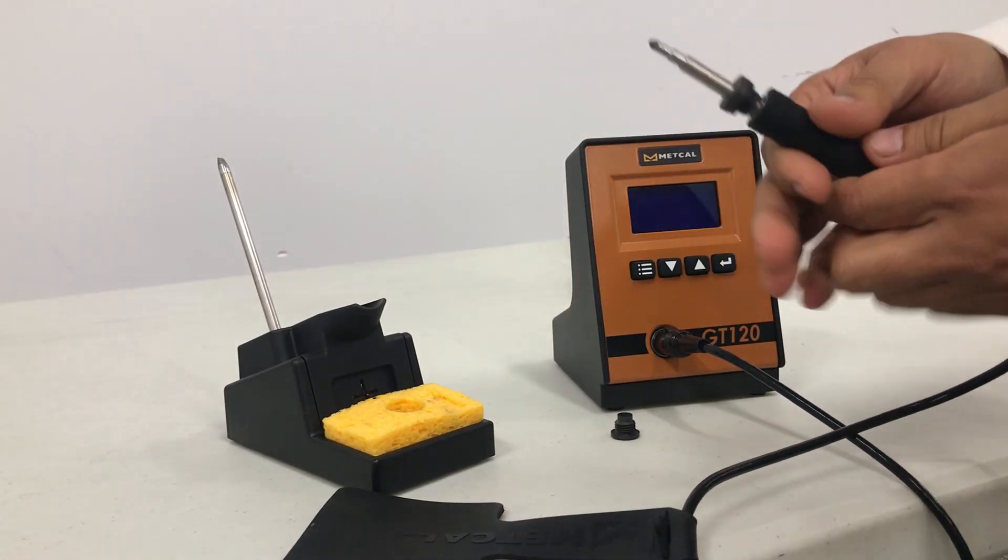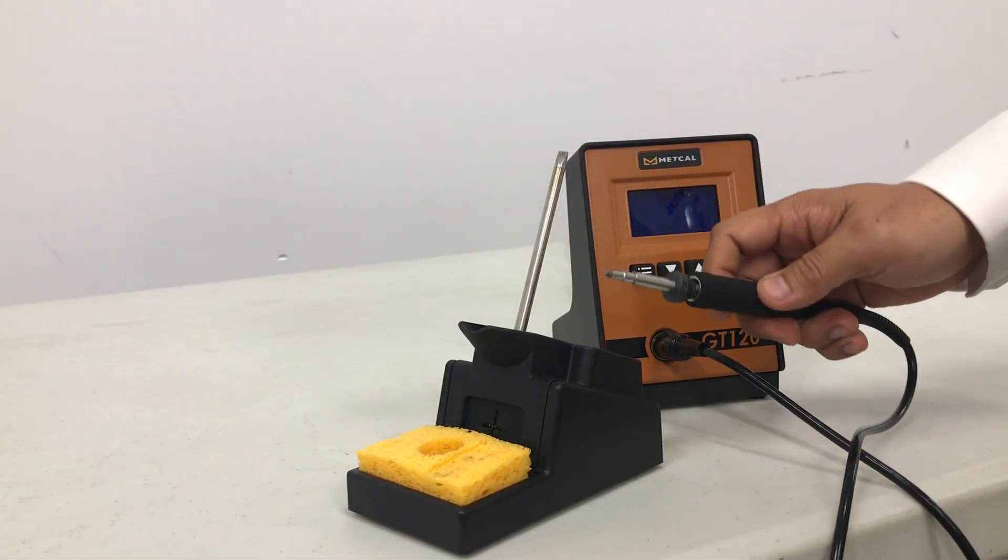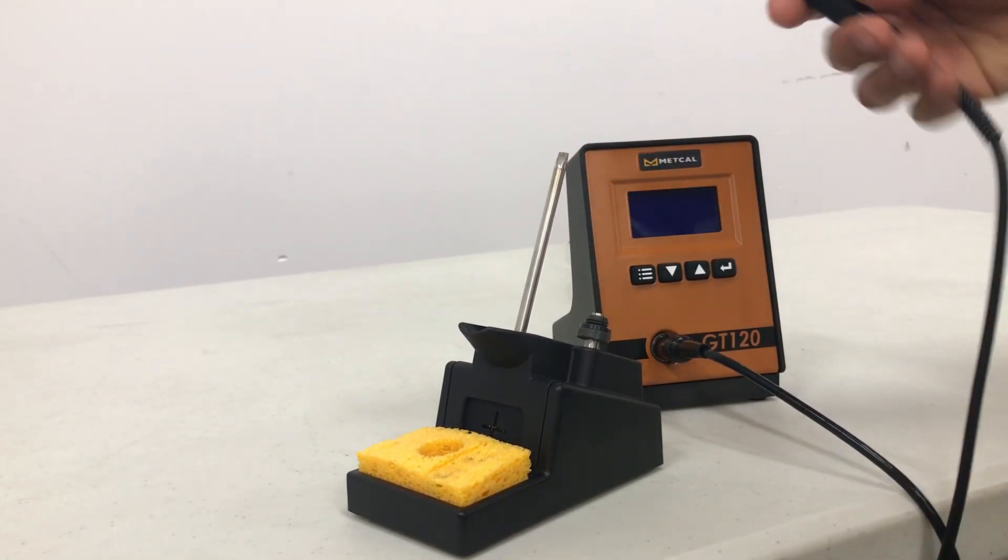It's loose now and here's a pro tip. With the work stand here, we're going to guide the tip and the tip retainer into the hole right there.